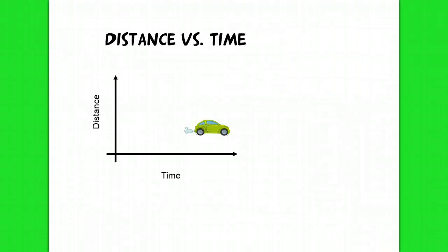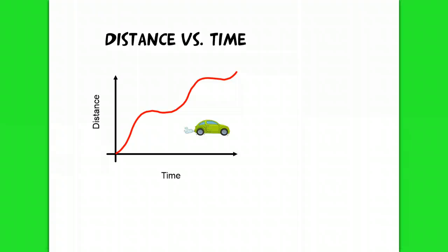Let's suppose that you drive in your car and you record the distance you travel every few minutes. If you never made any stops and never had to slow down or speed up, then your graph might look like a linear function. But most likely you'll be speeding up and slowing down, so your graph will probably look more like a curve.